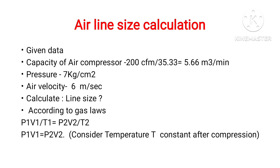The data required for airline size calculation are given here. First of all, we need the capacity of the air compressor, which is provided in CFM. We have to convert this CFM into meter cube per minute. For this conversion, we simply divide the CFM value by 35.33.